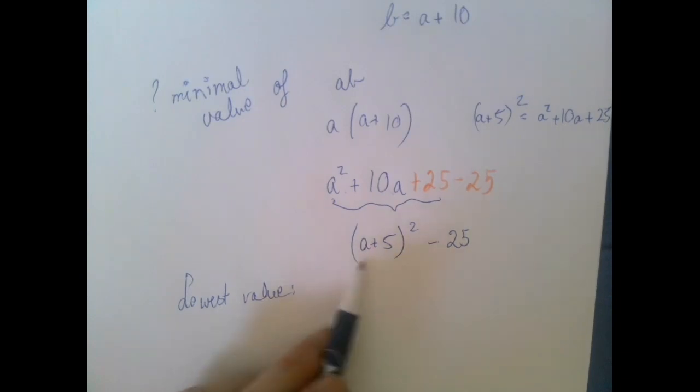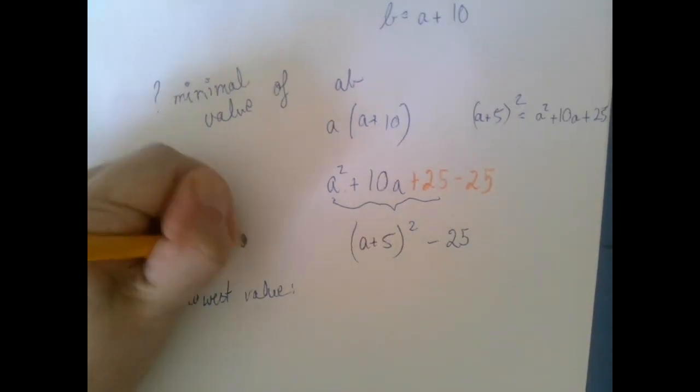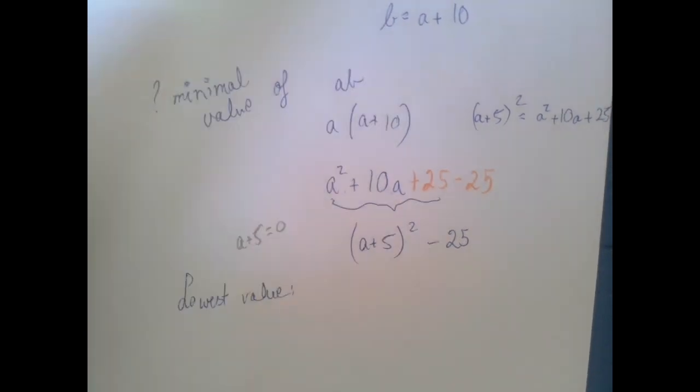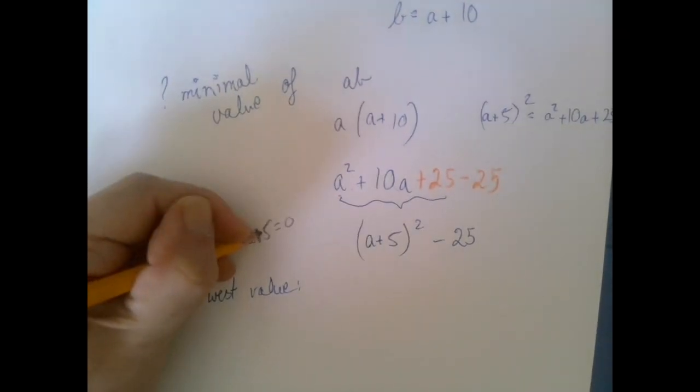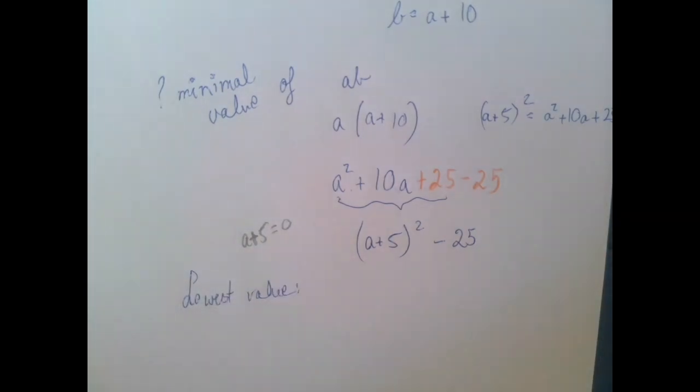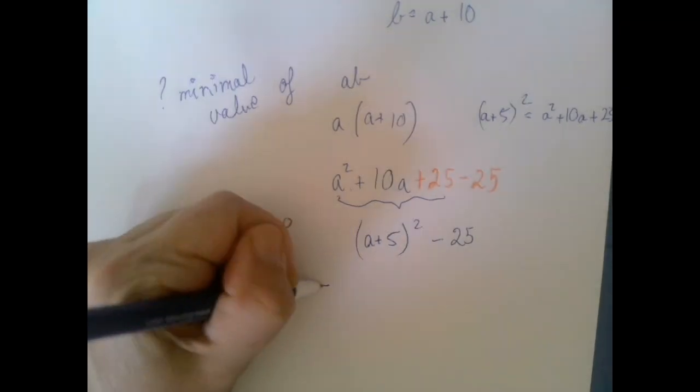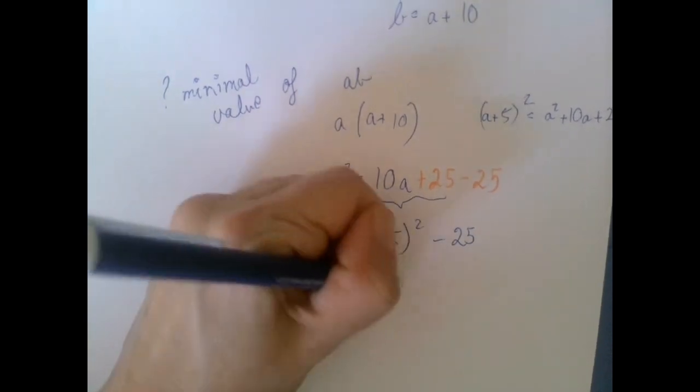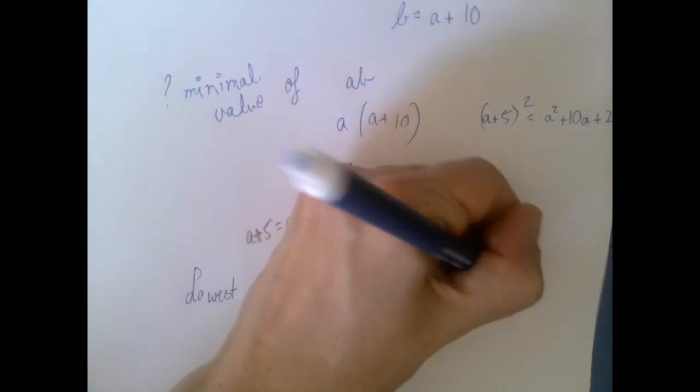Is that possible? Could this be 0? Basically, you're mentally solving this cute little equation. To square to 0, you have to start with 0, you have to square 0. For that, a plus 5 has to be 0, which means a has to be negative 5. So the lowest value is negative 25 when a is negative 5.